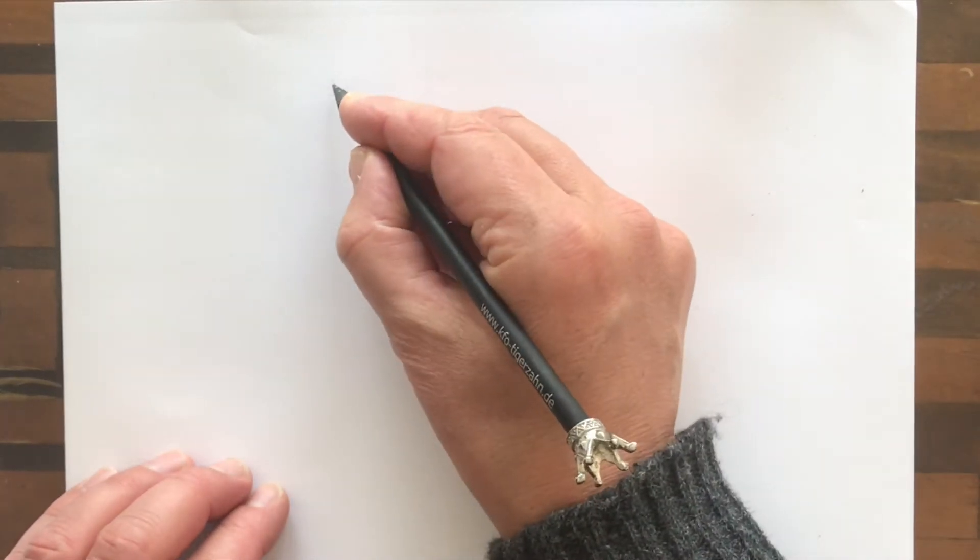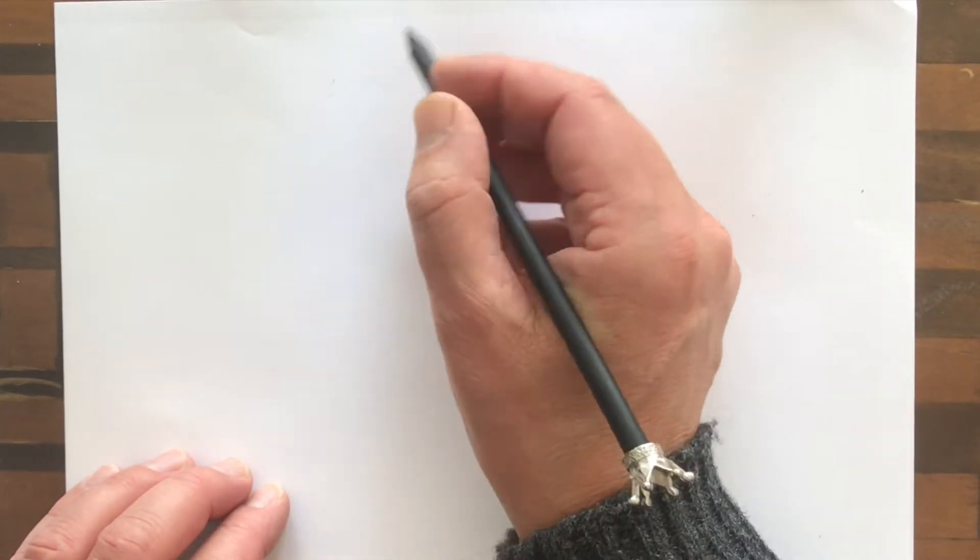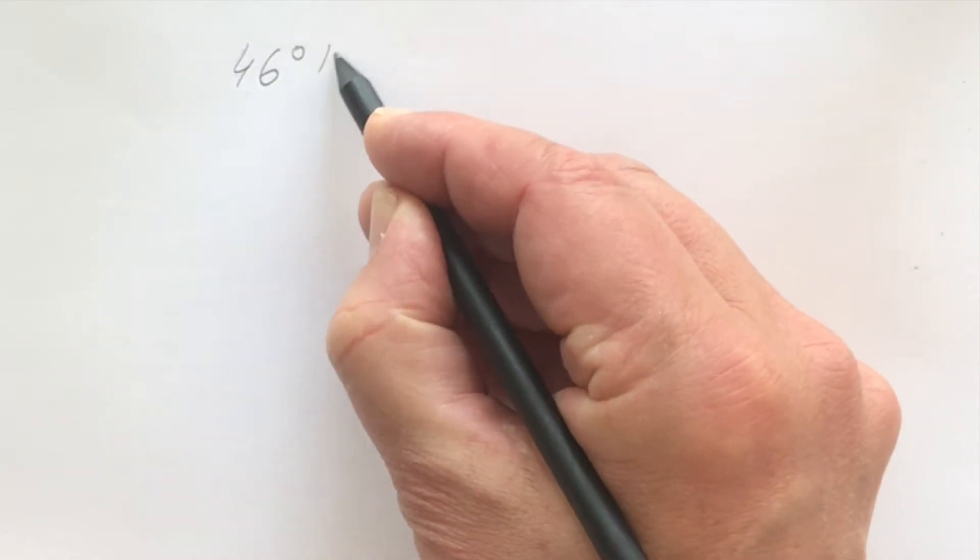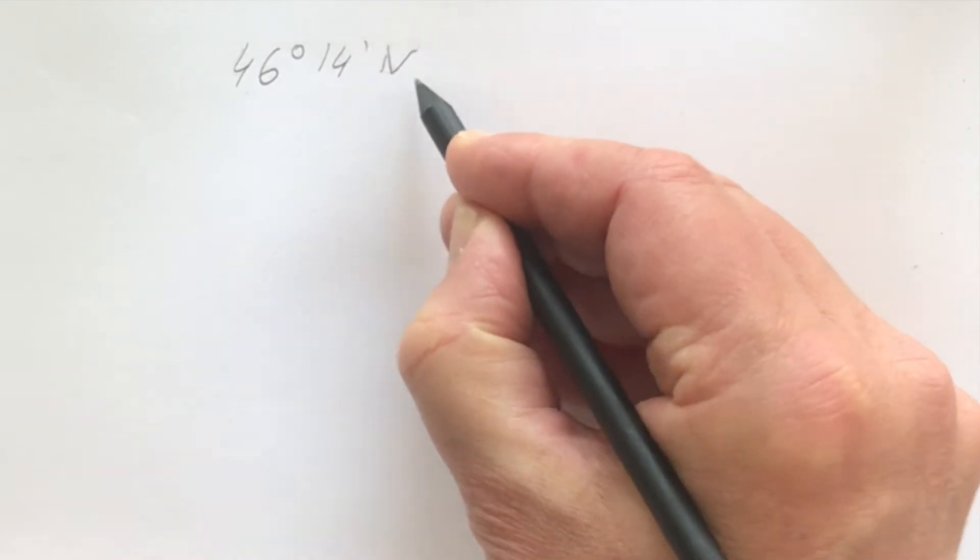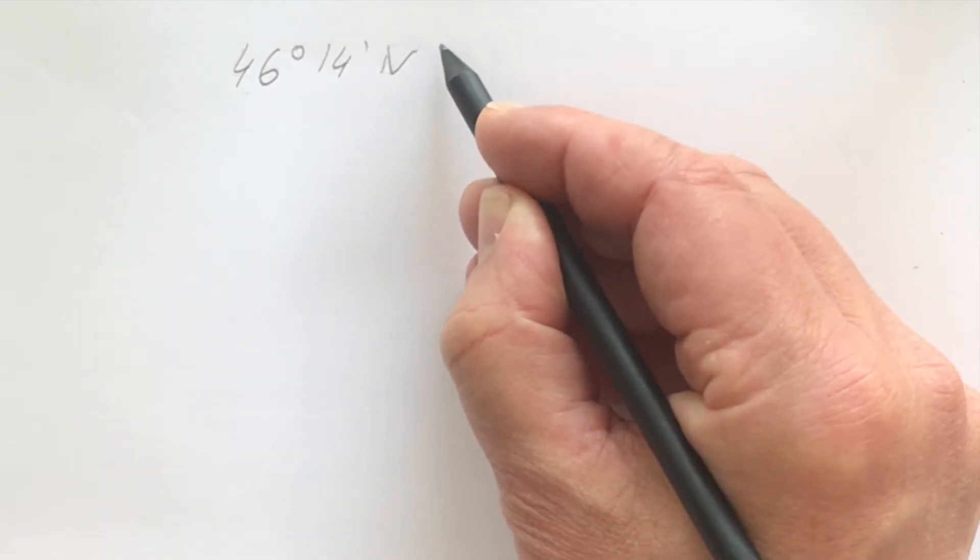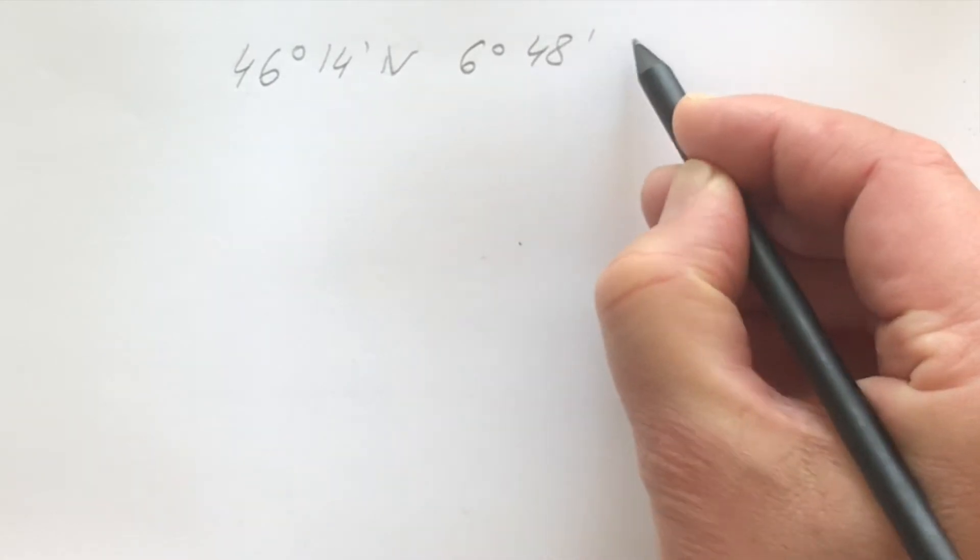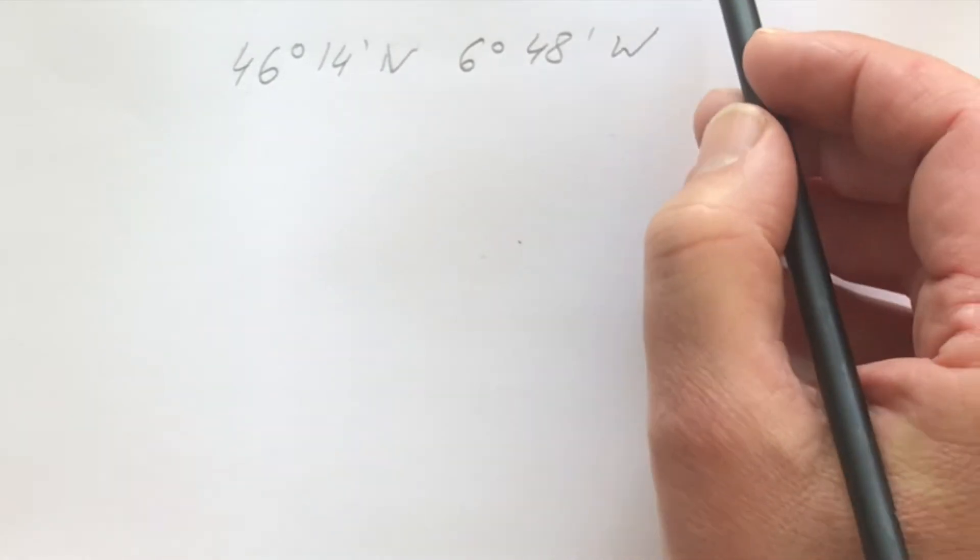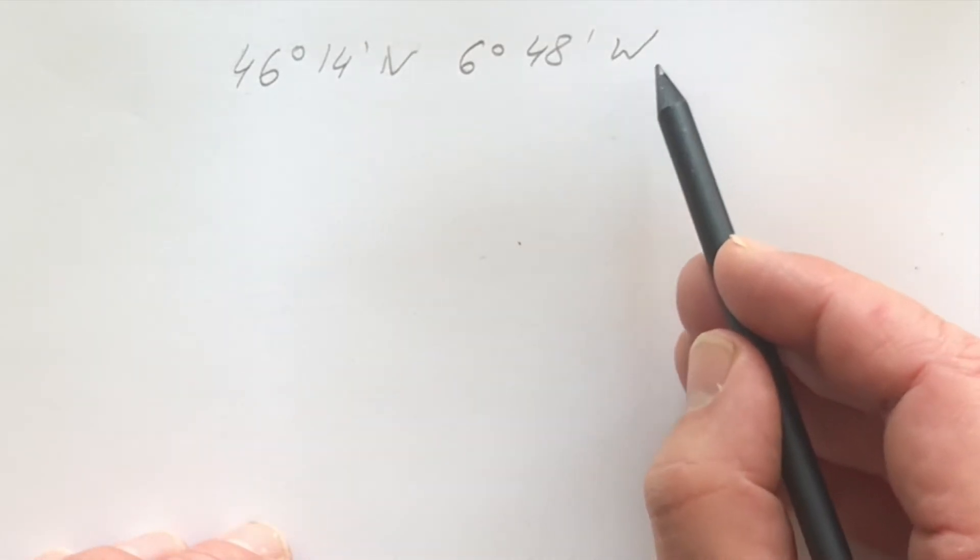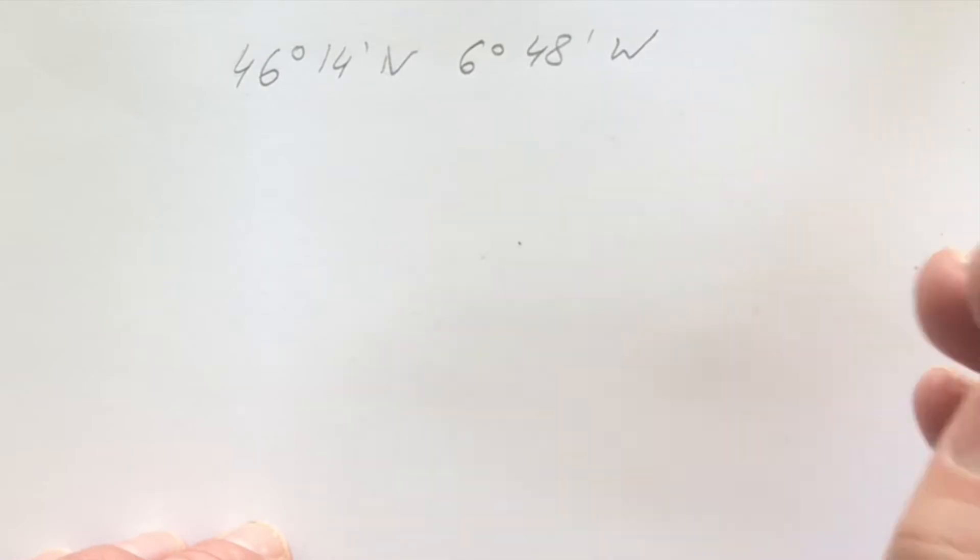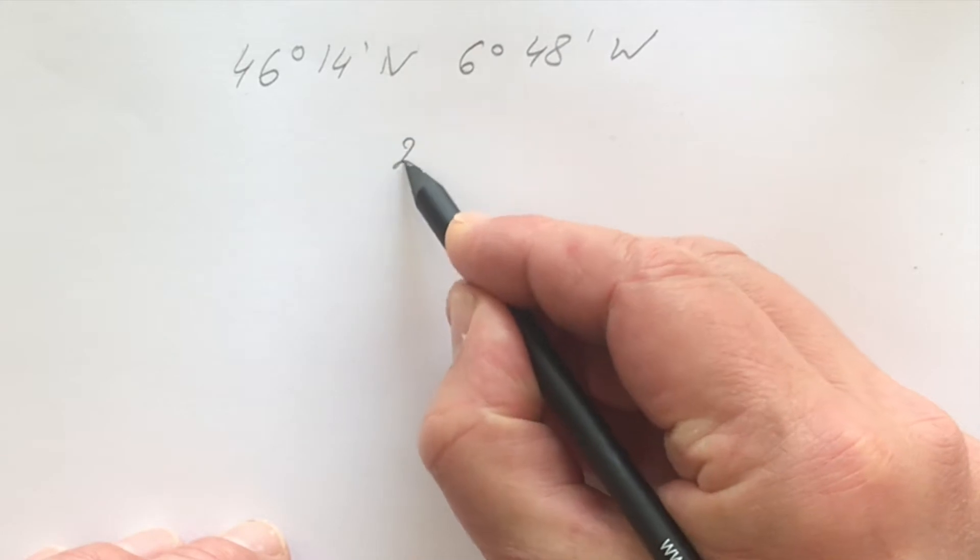Let's assume we are on the Bay of Biscay somewhere. We have an estimated position of 46 degrees and 14 minutes north, and 6 degrees and 48 minutes west. So the question is now, when will it be noon at our position? For this we need a day. Let's take the 20th of March.